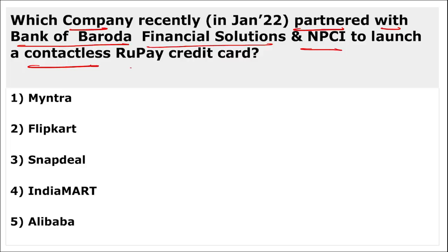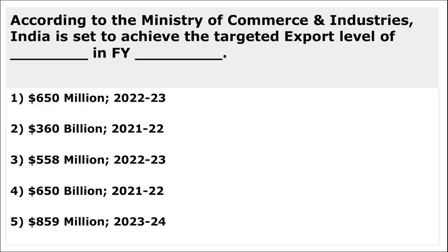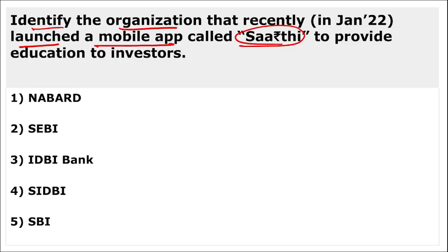Snapdeal partnered with Bank of Baroda Financial Solutions and NPCI to launch a contactless RuPay credit card. According to the Ministry of Commerce and Industries, India is set to achieve a target export level of 650 billion dollars by 2021-22. SEBI launched a mobile app called SAARTHI to provide education to investors — it is an investor education app available in Hindi and English, based in Mumbai.